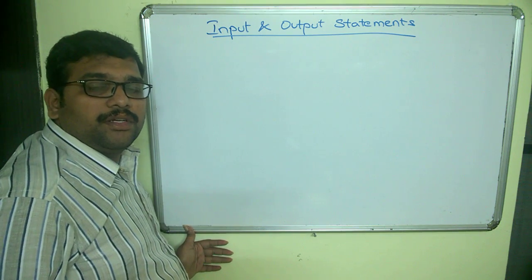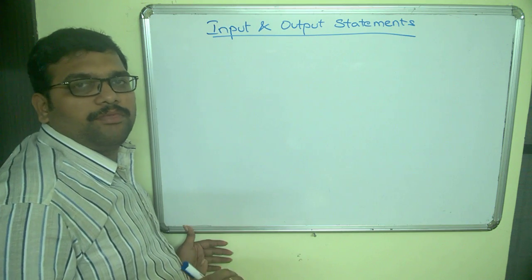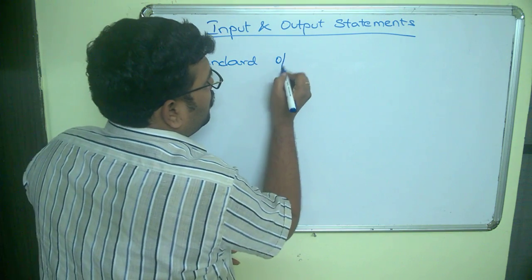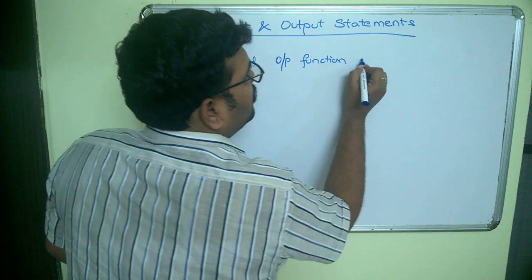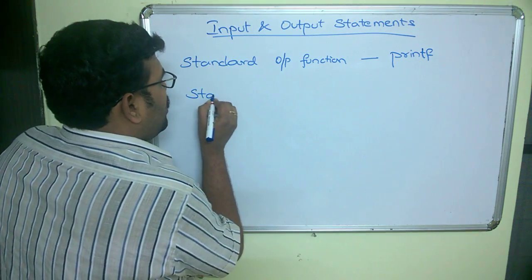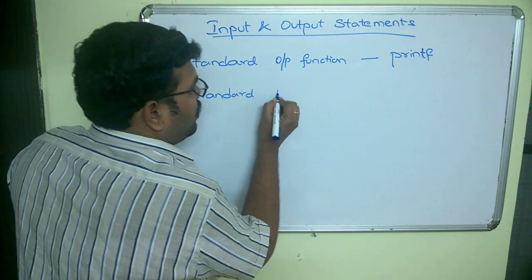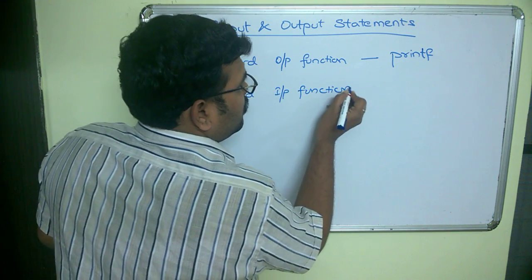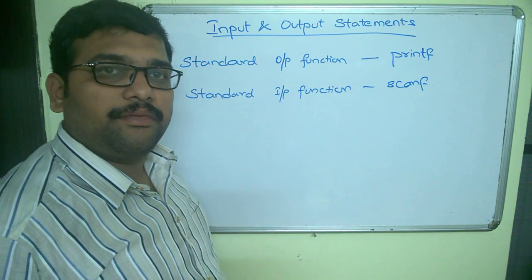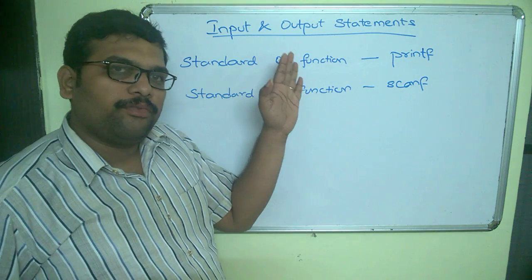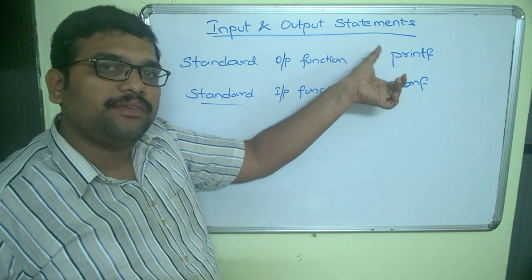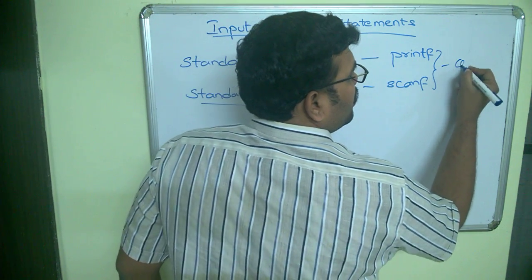In C language there are two standard input and output functions. The standard output function is printf, and similarly there is a standard input function named scanf. Both are standard input and output functions. The name 'standard' means these are not defined by the user — they are defined by the compiler.